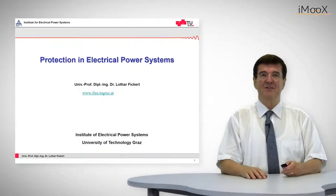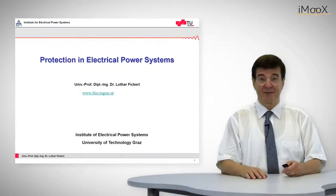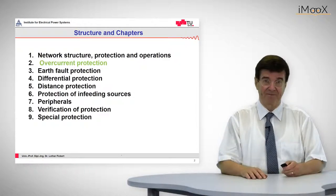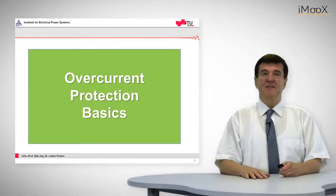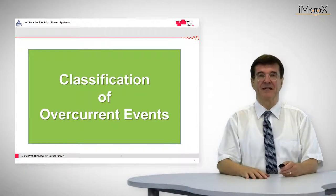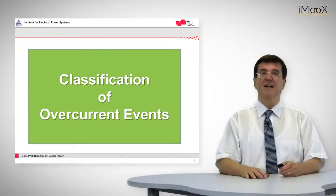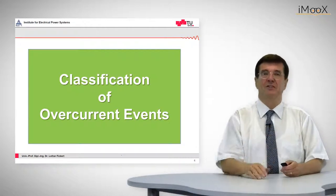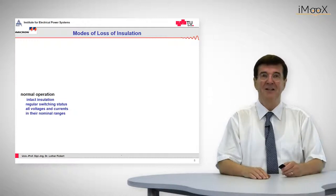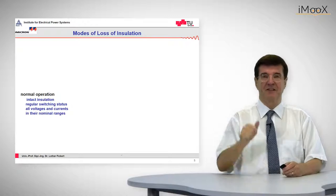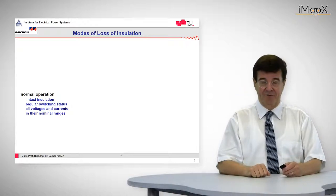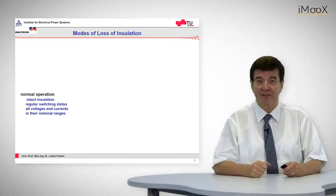Hello and welcome everybody to the lecture about protection of electrical power systems. This time I would like to talk about overcurrent protection. This lecture is devoted to the overcurrent protection basics and I would like to start with a classification of the overcurrent events. Overcurrent events start out of the regular state of the network. The regular state is the status of normal operation, which is characterized by three features. Feature number one is that the insulation is everywhere intact and okay — that means in all phases and at all locations.